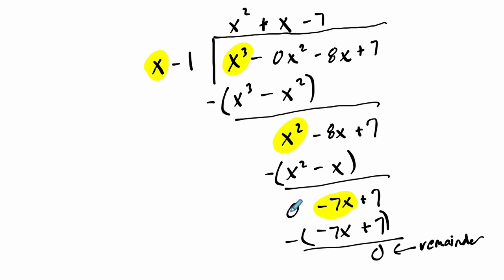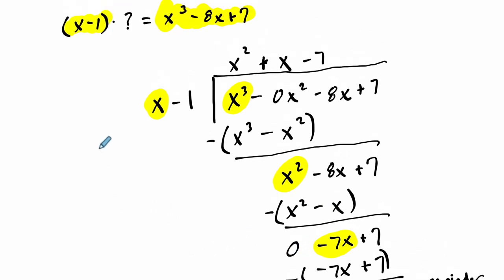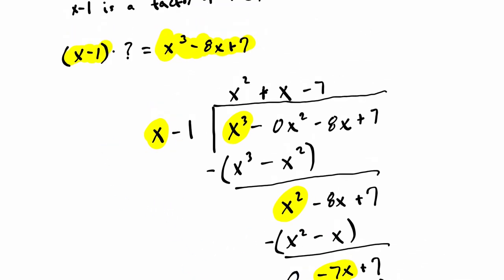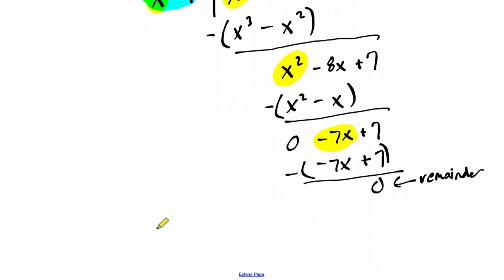And that tells you a lot of things. Well, it tells you that if you take, let's highlight it now in a different color, this X minus 1, that divisor, and multiply it by this quotient, this other factor, you will get P of X. That's what it's telling you. These are the two factors.